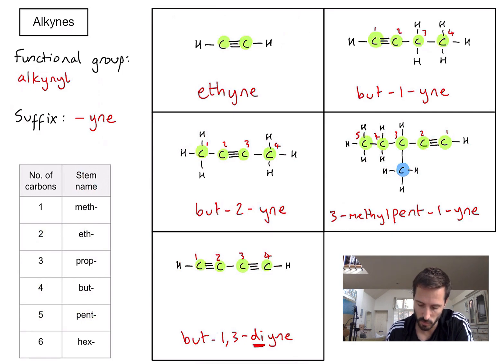And remember in this case, if you've got two of the functional group, little di in there, if there were three triple bonds, it would be tri and so on.